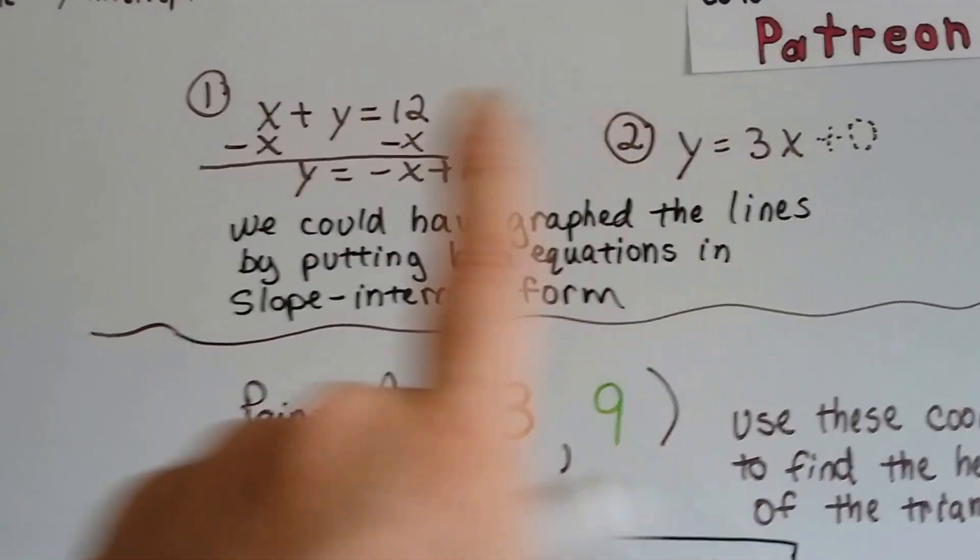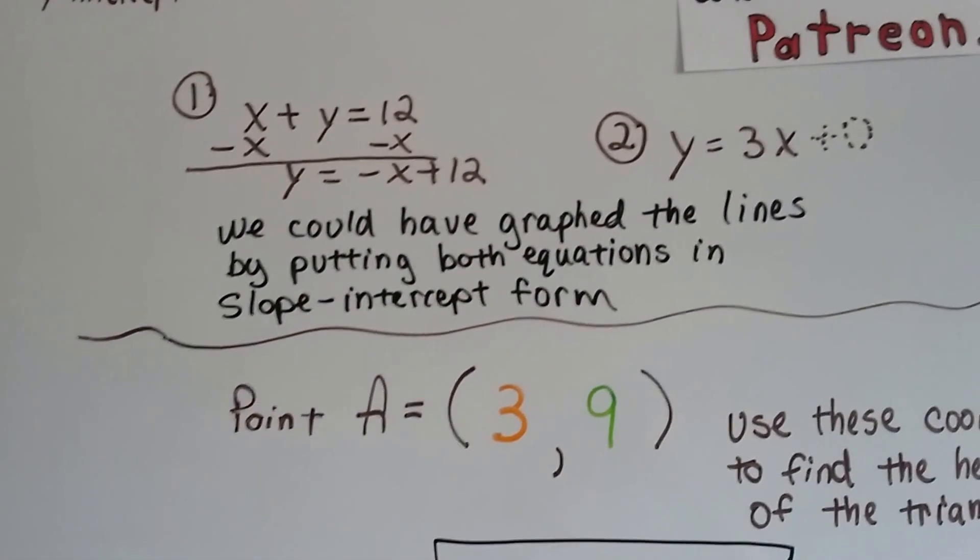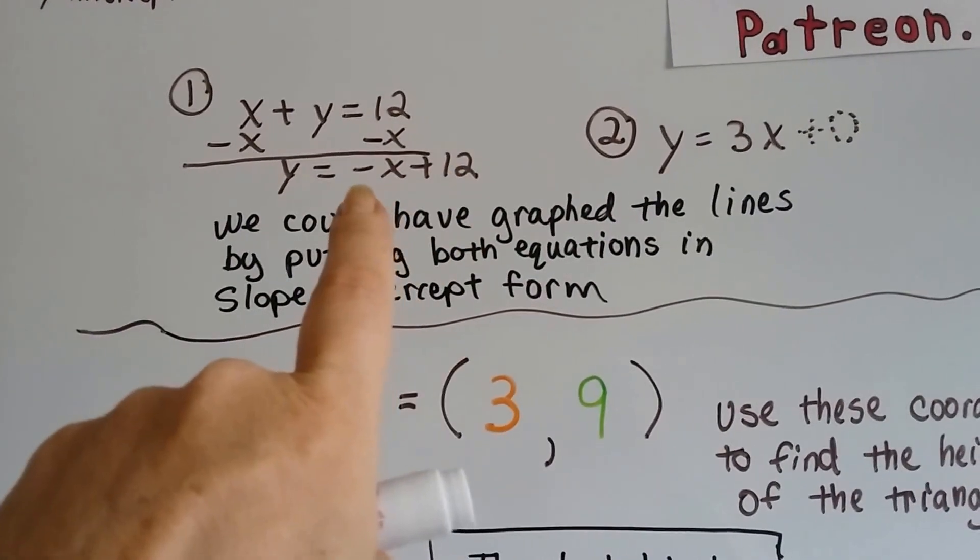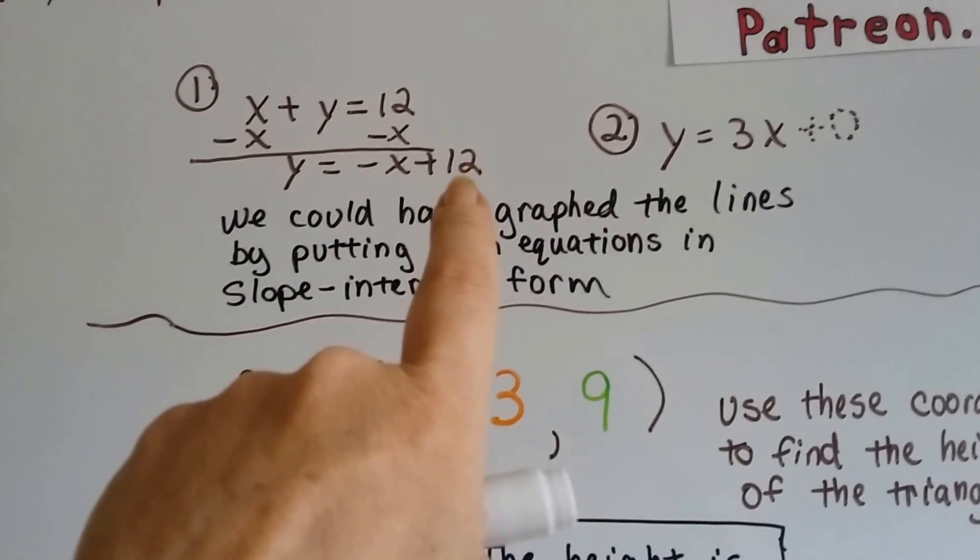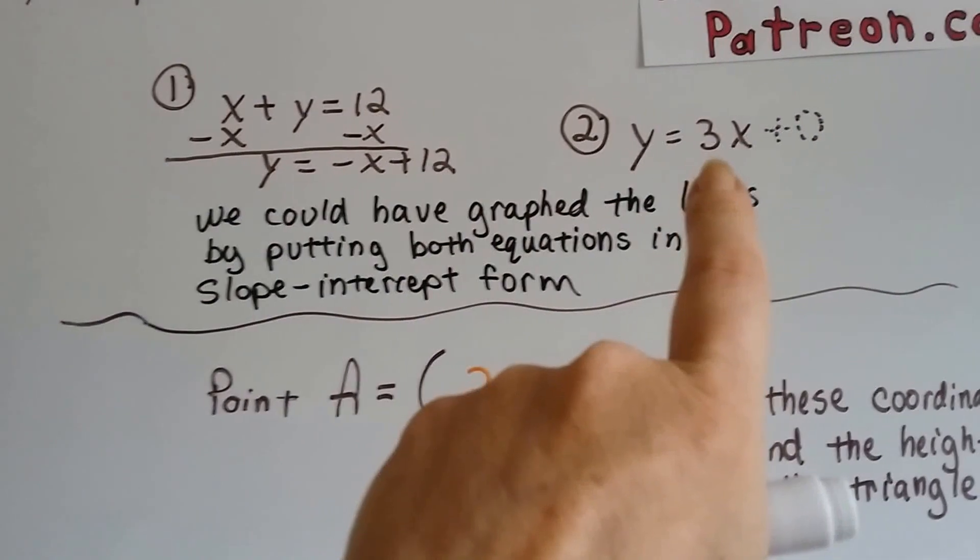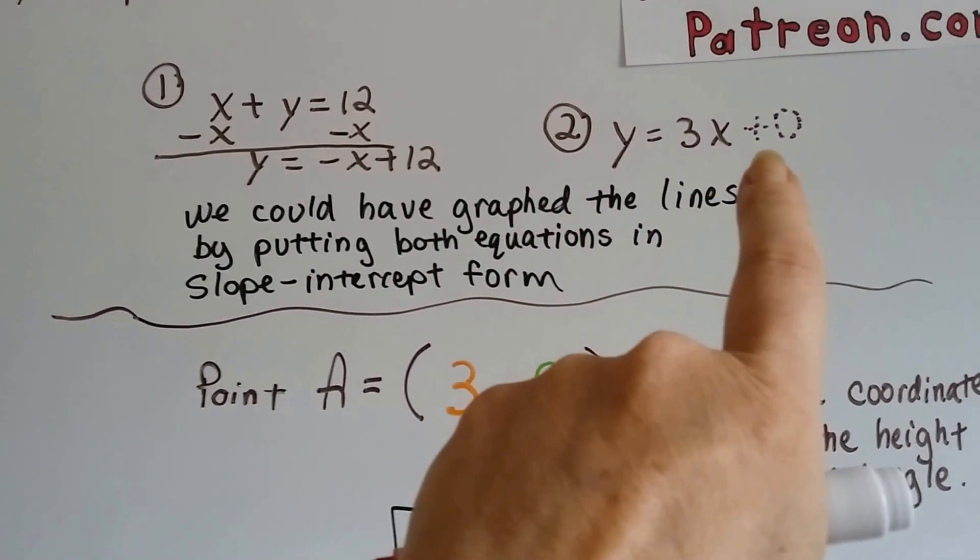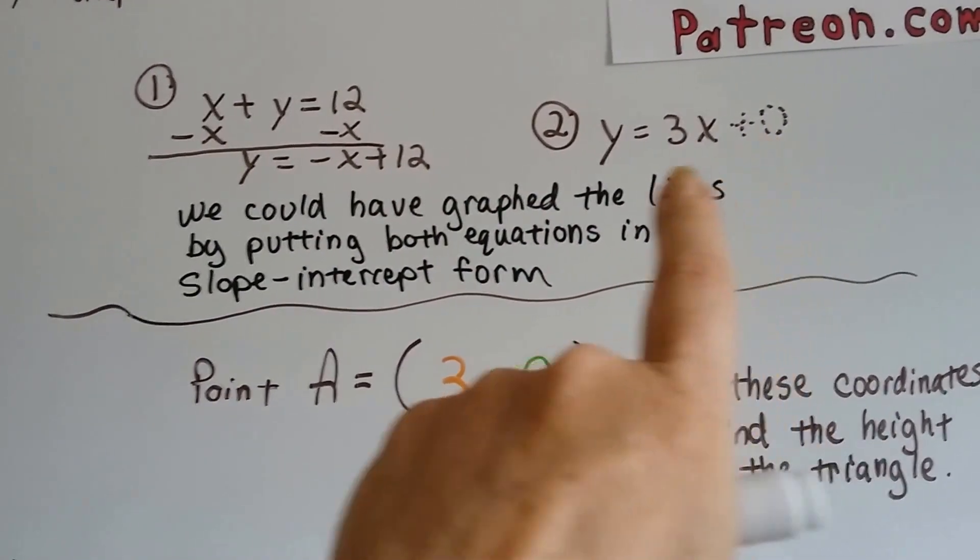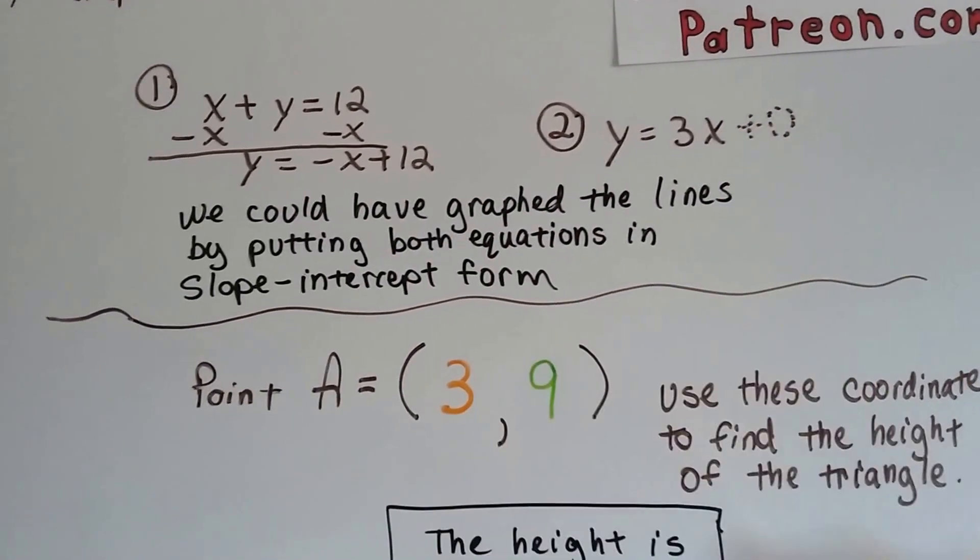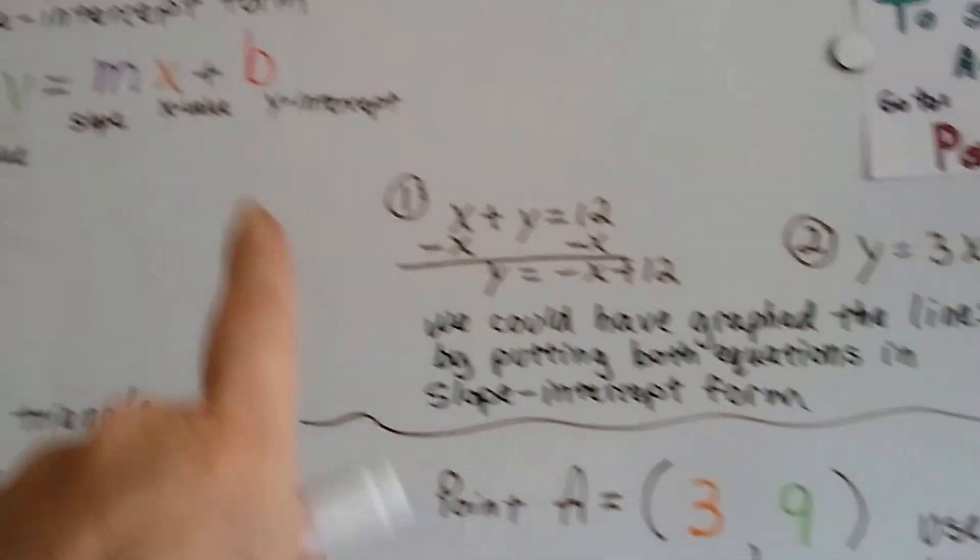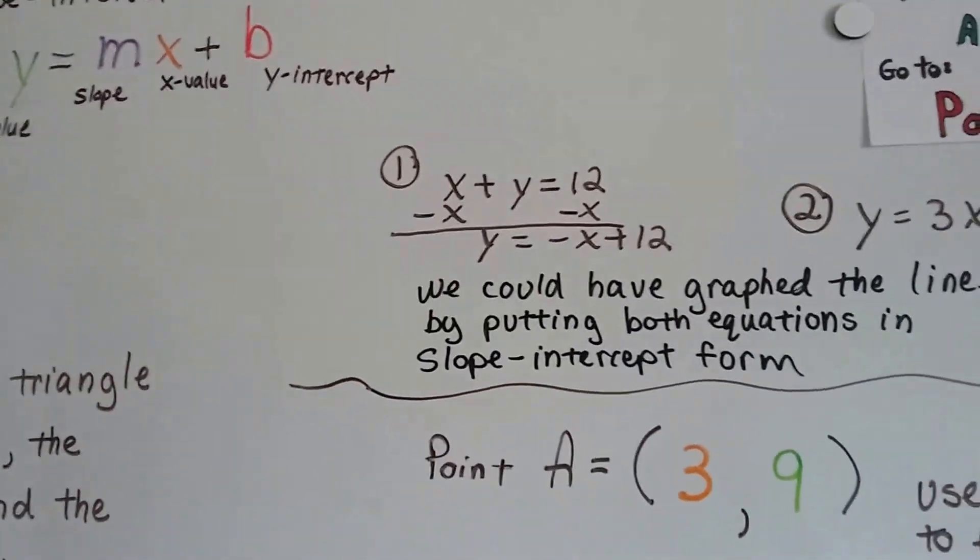We could have put them in slope-intercept form and we could have graphed them ourself because we know that this is a negative 1 slope that hits the y-axis on 12 and this is a positive 3 slope that hits the y-axis on a 0. When it doesn't have anything written back here for the y-intercept b, that means we can just put a 0 there. A plus 0 to put it in slope-intercept form.